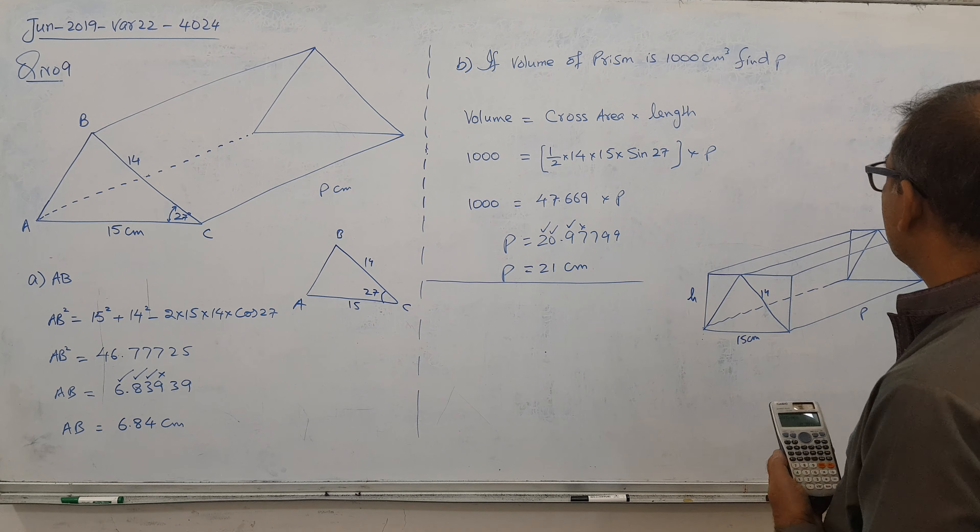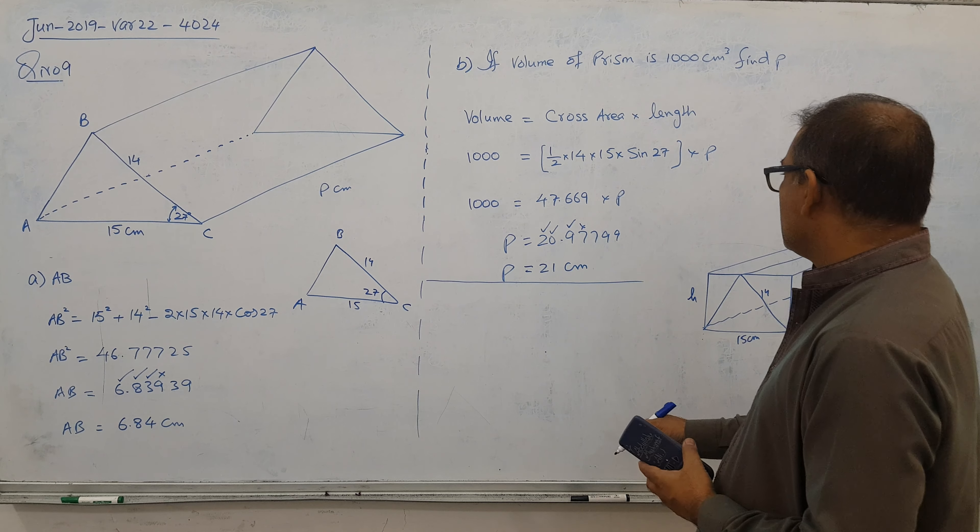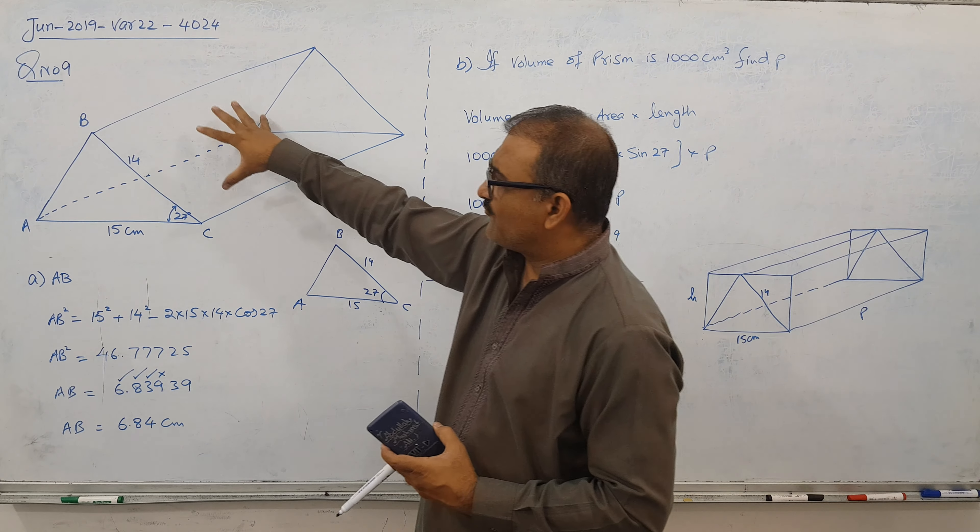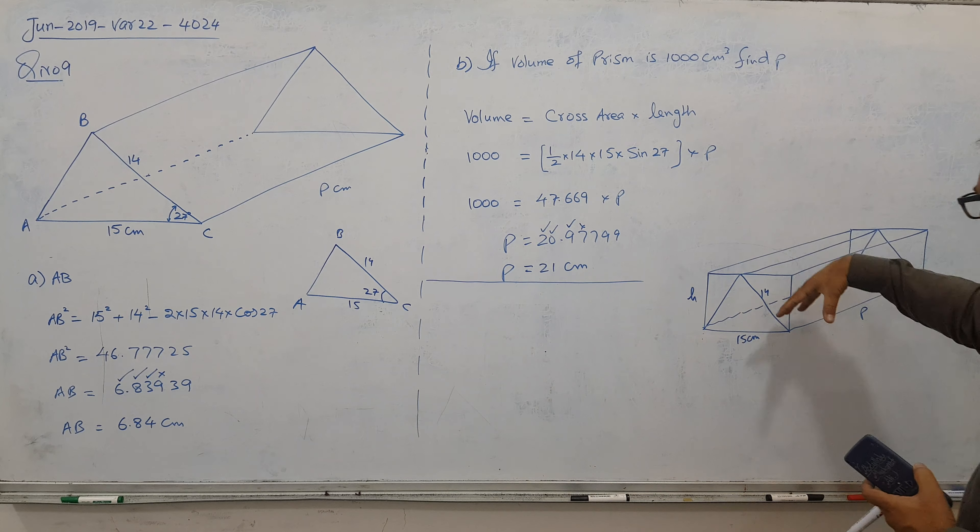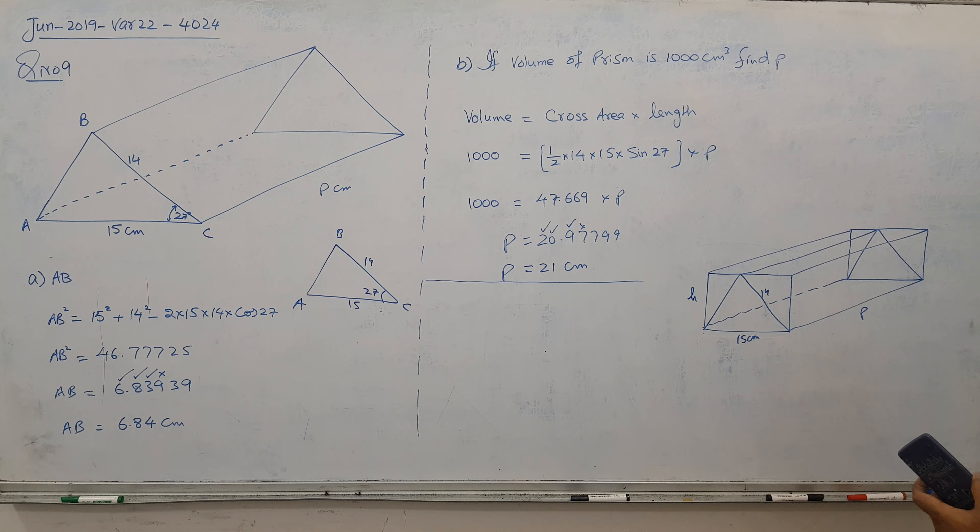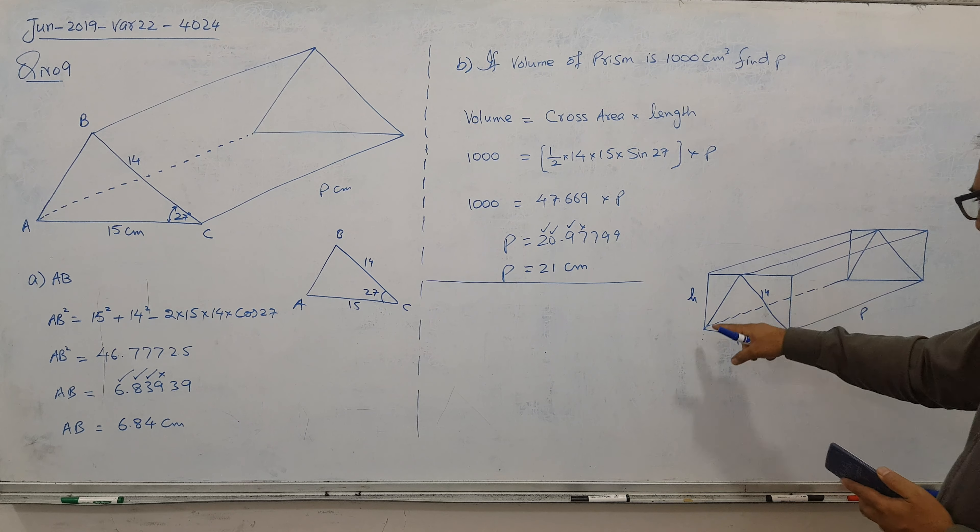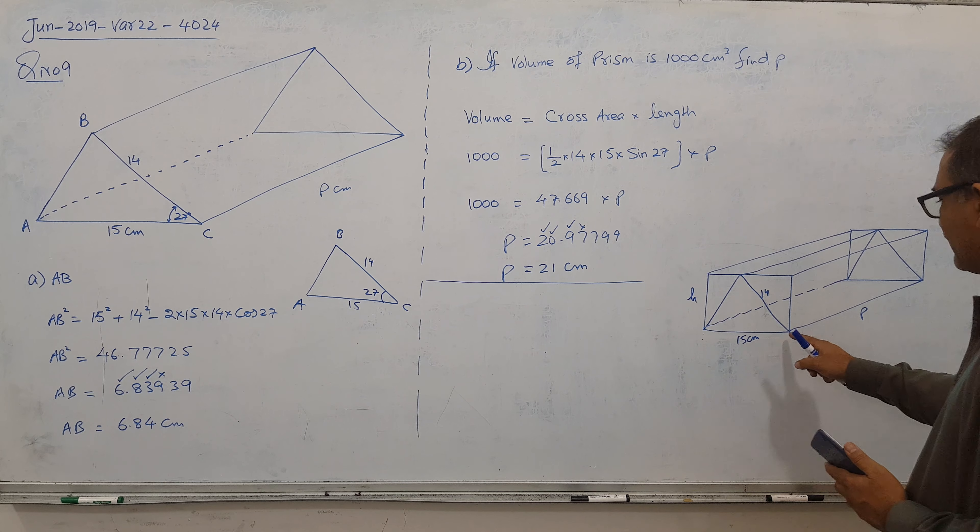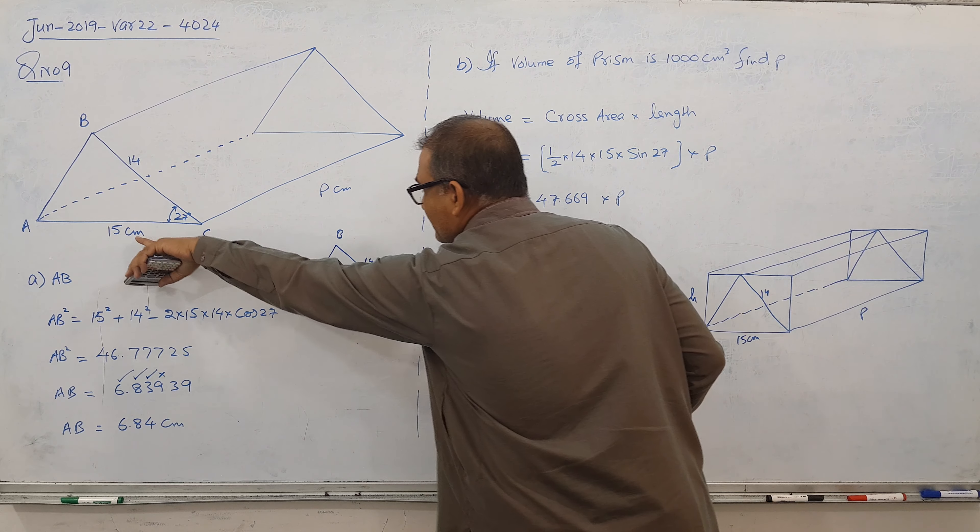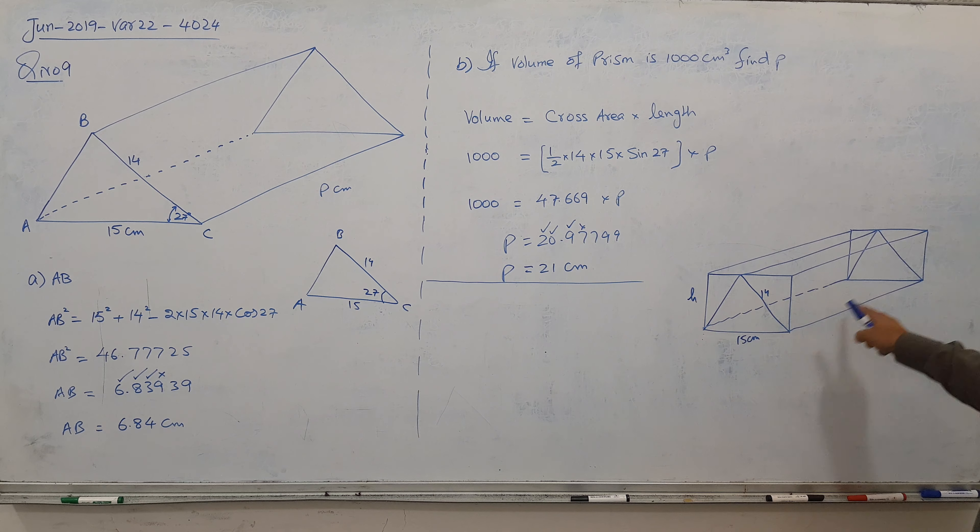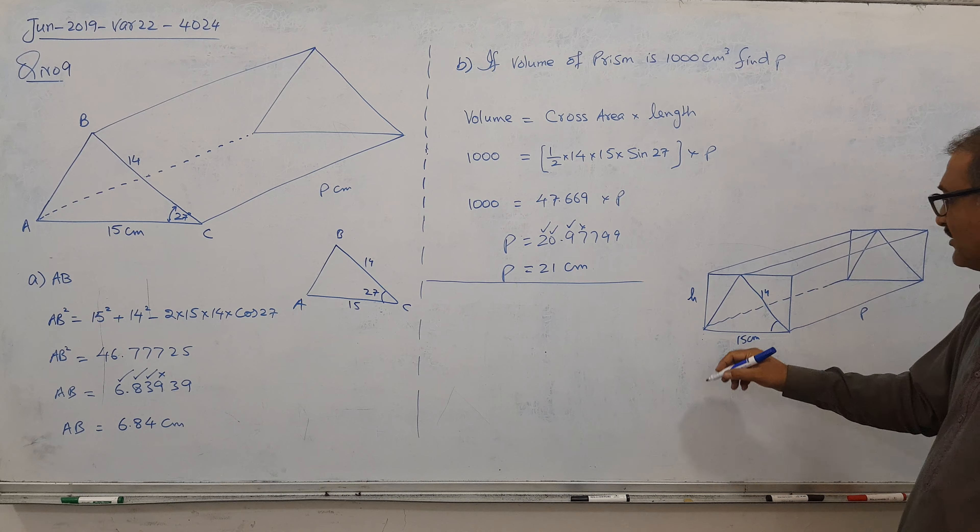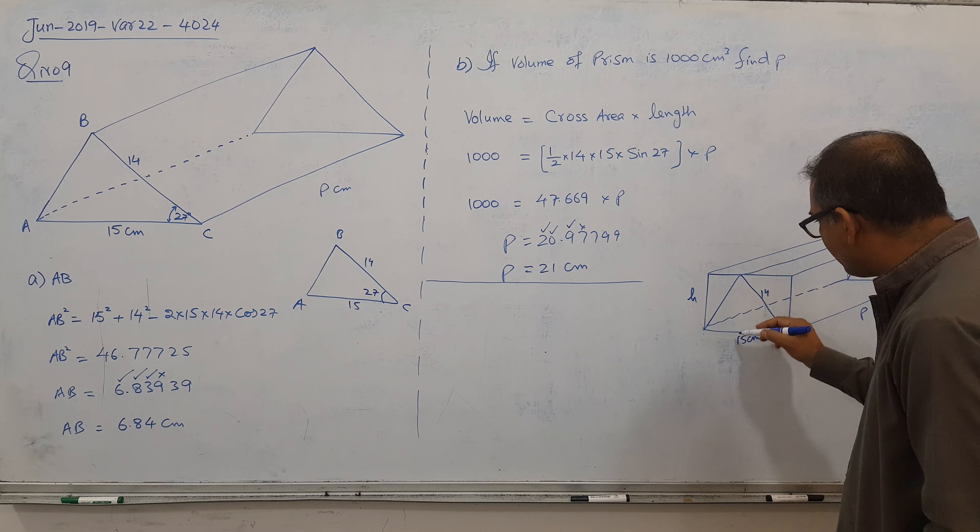Now let's go for this part. So this part is actually where he fitted the full prism in a box. You can see that I made a box, and this is the triangle fitted there. And he's saying the length of this prism is P, and this is 14. I didn't even mention here, this angle is 27. He's asking what's the height of that.